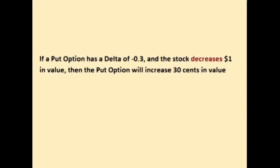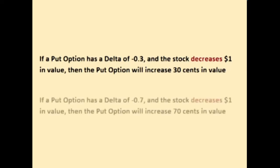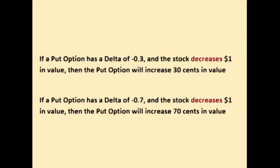If a put option has a delta of negative 0.3 and the stock decreases a dollar in value, then the put option will increase 30 cents in value. If a put option has a delta of negative 0.7 and the stock decreases a dollar in value, then the put option will increase 70 cents in value.